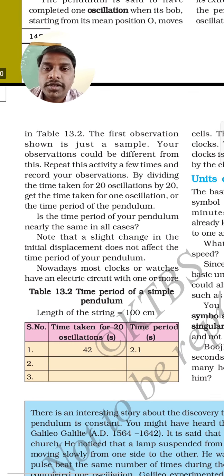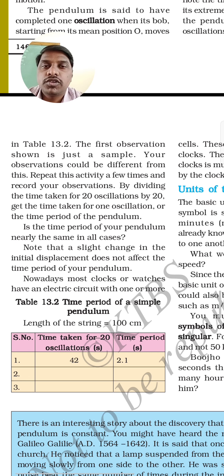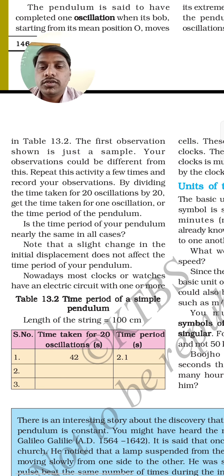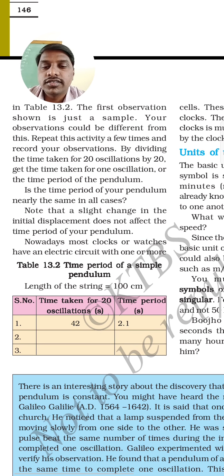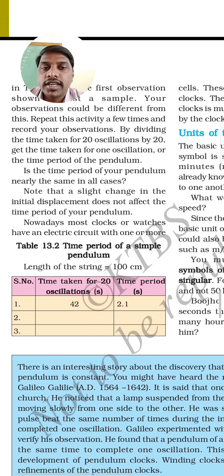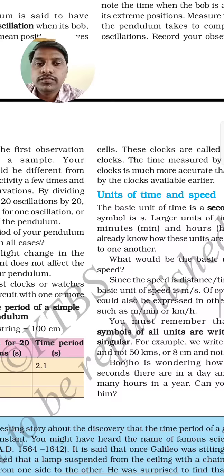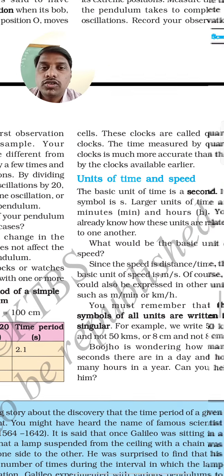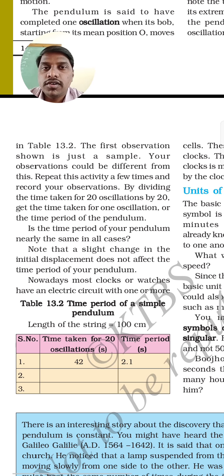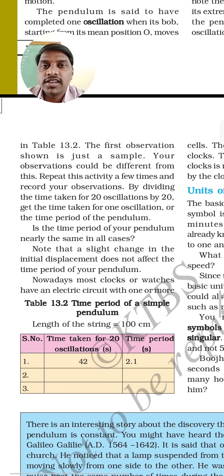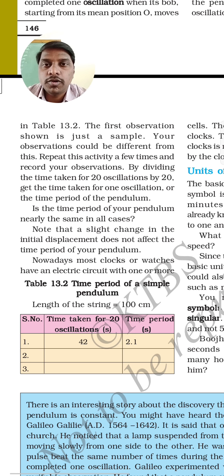The time taken by the bob to complete one oscillation is known as the time period. Repeating the activity and dividing the time taken for 20 oscillations by 20 gives the time period. Quartz clocks measure time much more accurately than earlier clocks. That's today's class — if you have any doubts, please comment in the comment box and we will answer your questions. Take care, have a nice day, bye!